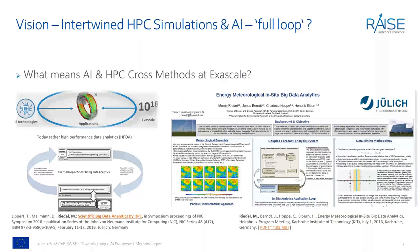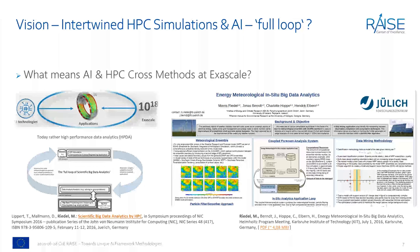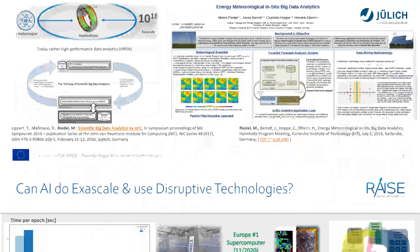The vision of intertwining HPC simulations with AI is one I've shown in other seminars. For example, in a full loop of scientific simulations, you might have thousands of meteorological ensemble runs in parallel on a supercomputer. Using AI techniques and statistical tools, you can actually cancel certain runs earlier to save computational time, or learn from past simulations to better predict future simulation parameter spaces — for example using particle filters.